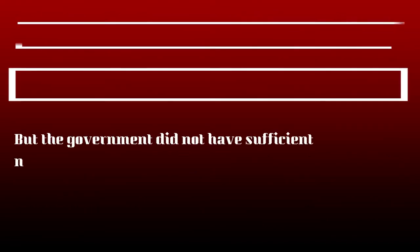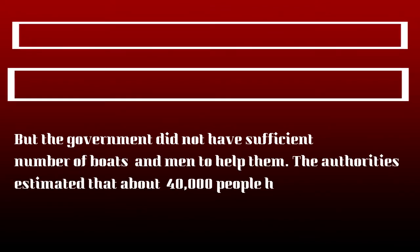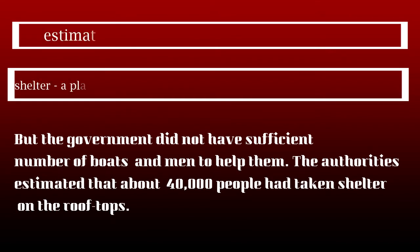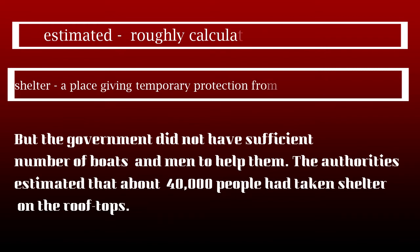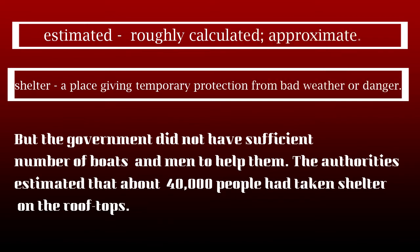But the government did not have sufficient number of boats and men to help them. The authorities estimated that about 40,000 people had taken shelter on the rooftops. Estimated means roughly calculated or approximate. Shelter means a place giving temporary protection from bad weather or danger. The people were seeking assistance to rescue them from the flood, but the government did not have sufficient boats and men. Almost 40,000 people had taken shelter on the rooftops.